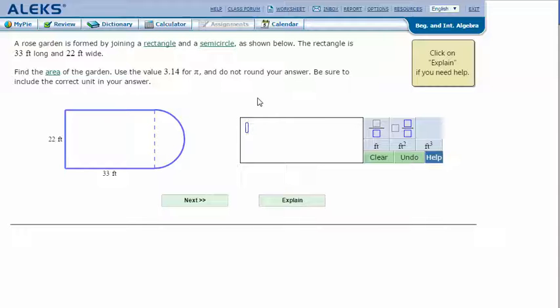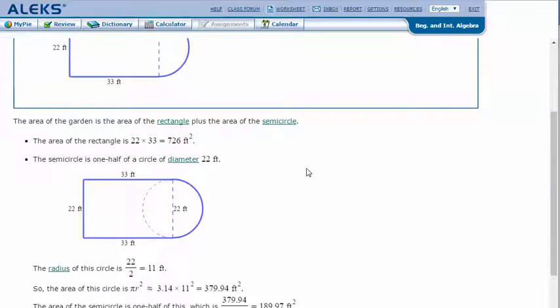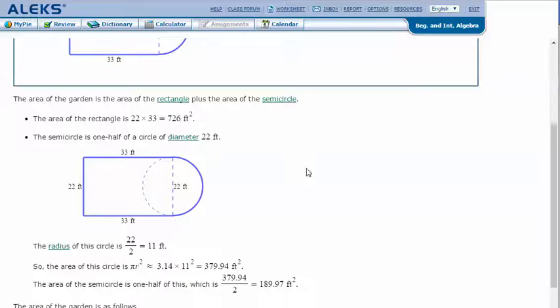A rose garden is formed by joining a rectangle and a semicircle as shown below. The rectangle is 33 feet long and 22 feet wide. Find the area of the garden. Use the value 3.14 for π and do not round your answer. Be sure to include the correct unit in your answer. Let's click Explain.